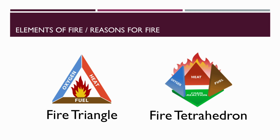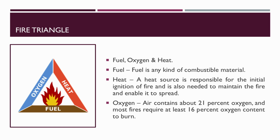Elements of fire: fire occurs whenever combustible fuel, in the presence of oxygen at an extremely high temperature, becomes gas. Flames are the visual indicator of the heated gas. As you can see on the screen, there are two pictures — the fire triangle and the fire tetrahedron. The fire triangle is a simple way of understanding the elements of fire.